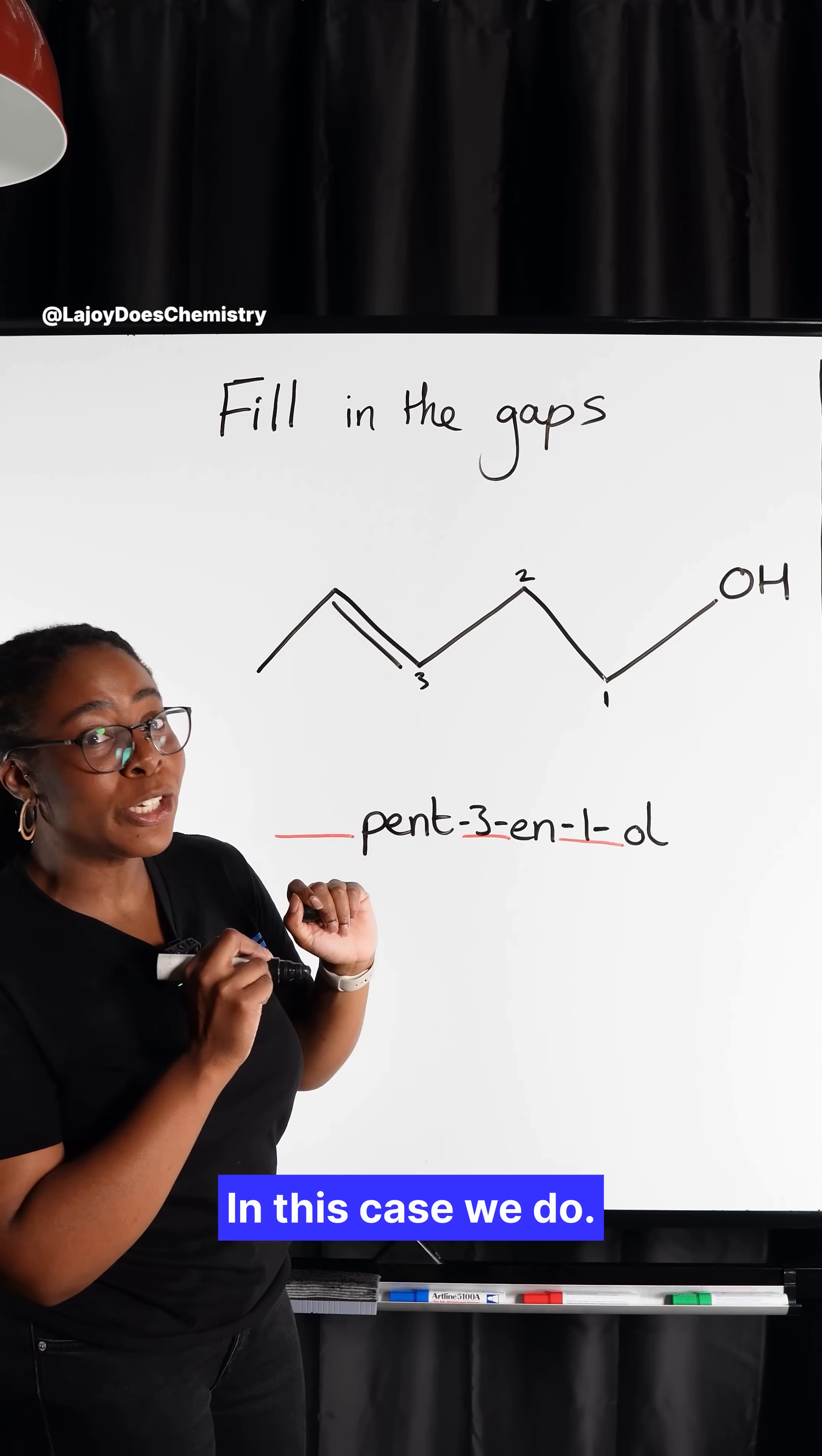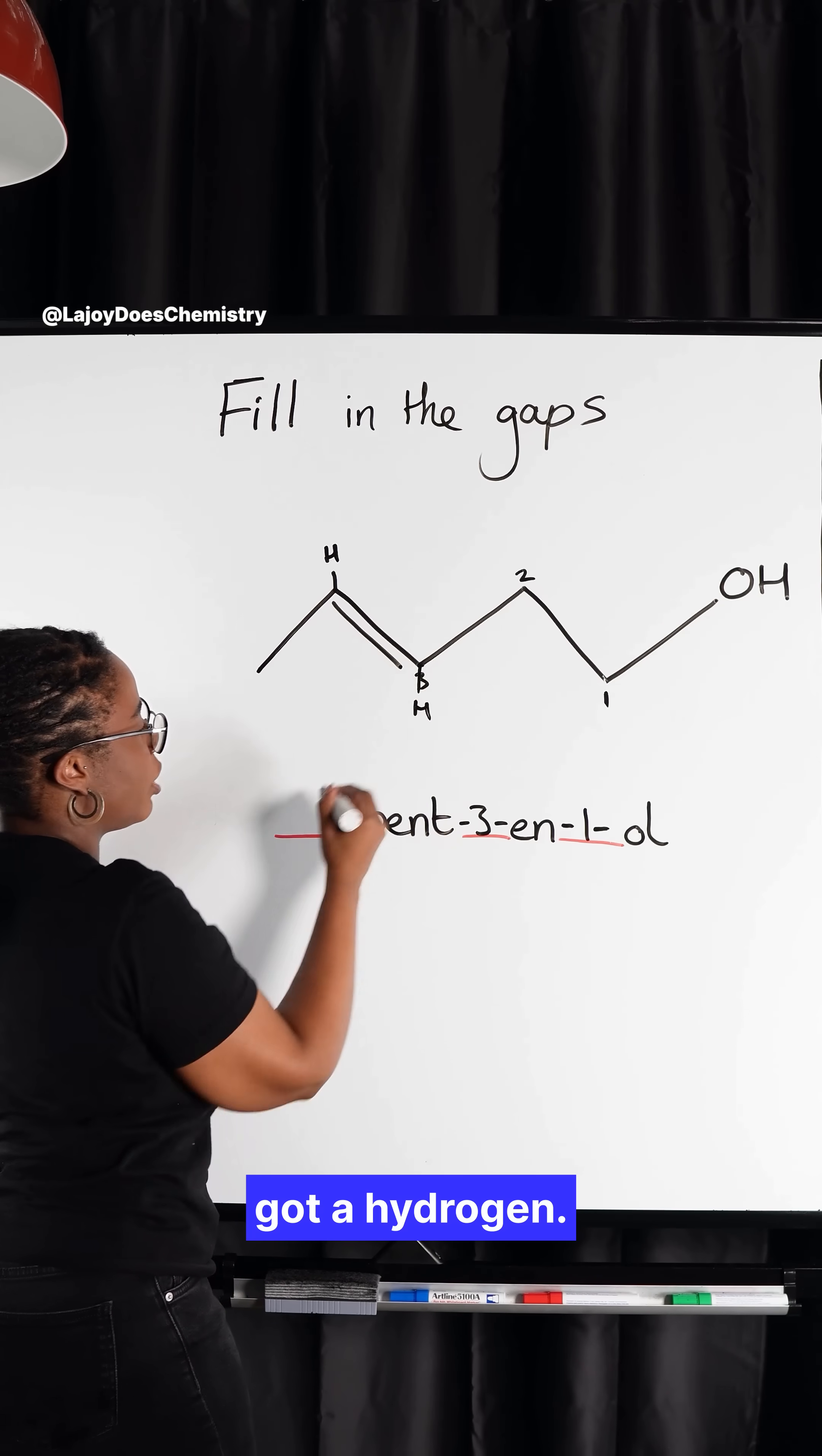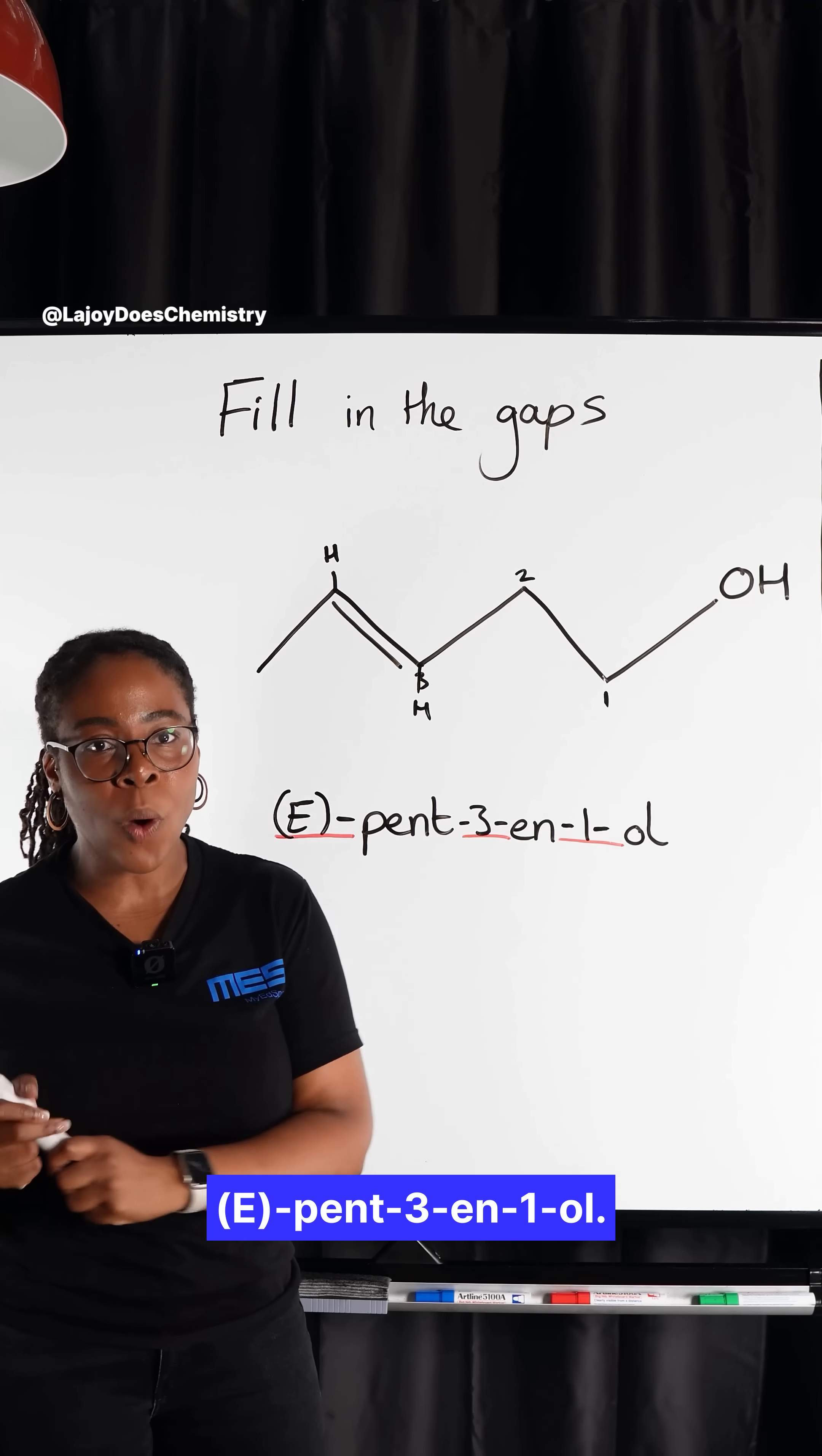In this case, we do. On this carbon here, we've got a methyl group and we've got this hydrogen. And on this carbon here, we've got this rest of the molecule. And again, we've got a hydrogen. Now, because these high priority groups are on opposite sides, this is the E isomer, making this (E)-pent-3-en-1-ol.